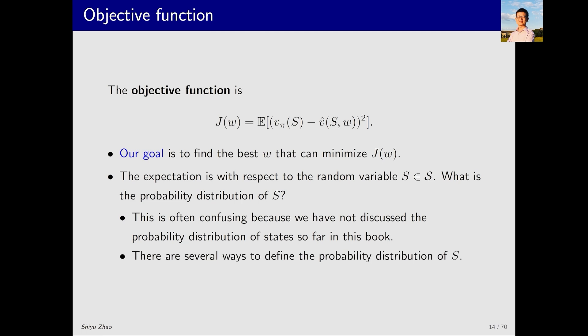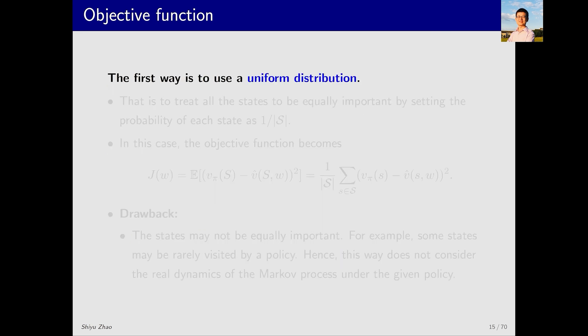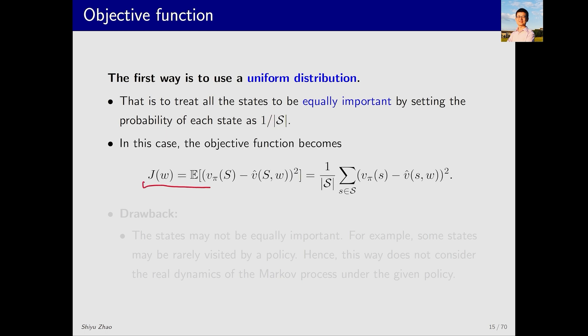We have several methods to define the distribution of s. Here I introduce two. The first one is the easiest to think of. It is the uniform distribution. It means that I treat all states as equally important, and I give every state the same probability or the same weight when averaging. If I have n states, then the probability or weight for any state is 1 over n. In this case, according to the definition of expectation, we get the right-hand side. This is the probability. Normally it should be inside, but I've taken it out because everyone's probability is the same. So what does this value represent? It represents the sum of the squared errors of the estimated values for all states, then averaged.